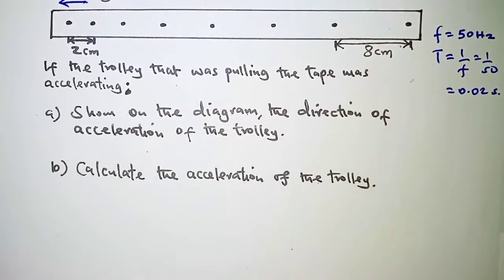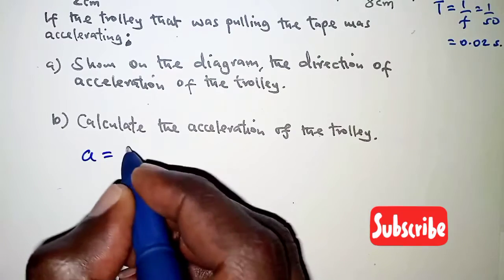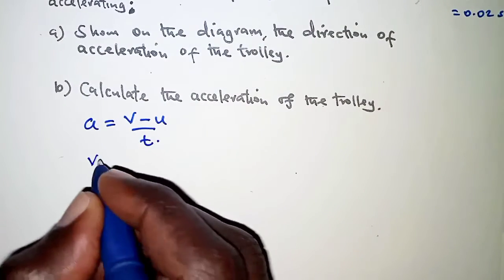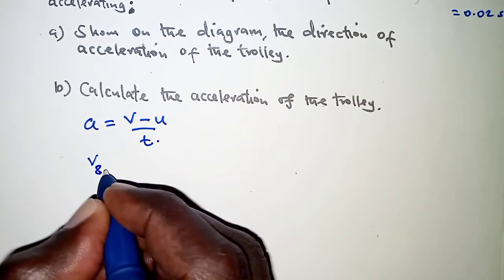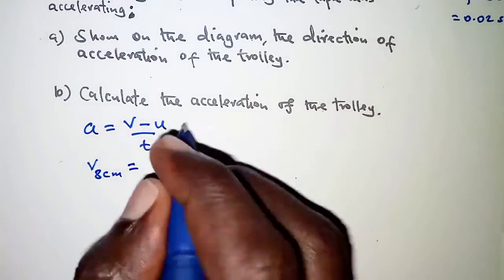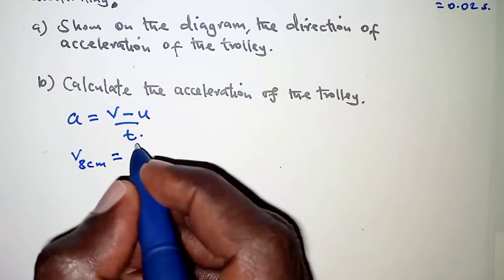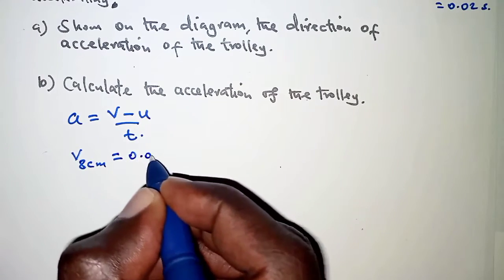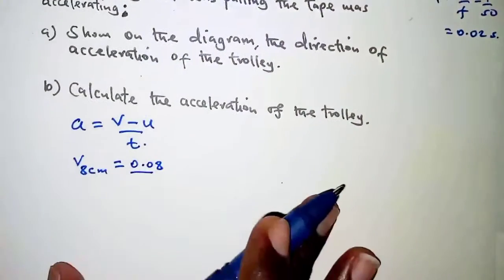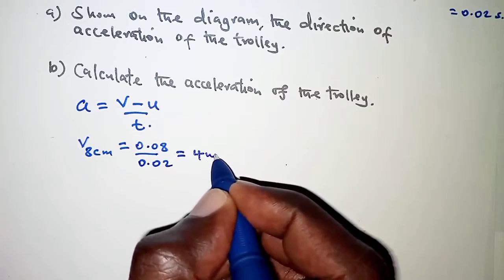For part b, we calculate the acceleration of the trolley. Acceleration is given by final velocity minus initial velocity, all over the time. The final velocity is the velocity determined during the last interval of 8 centimeters. So the displacement is 8 centimeters, which in SI units is 0.08 meters, divided by the time interval of 0.02 seconds. That gives us a final velocity of 4 meters per second.